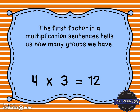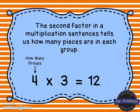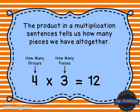The first factor in a multiplication sentence tells us how many pieces are in each group — here we have three pieces in each of those groups. And the product in a multiplication sentence tells us how many pieces we have all together — we have 12 pieces all together.